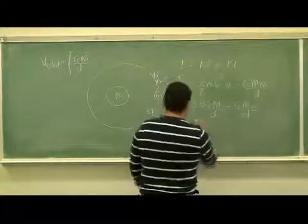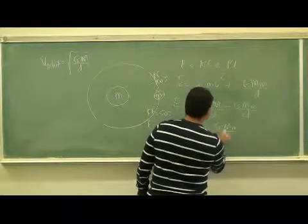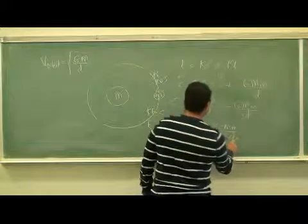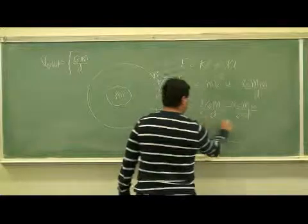So the final expression for the energy becomes negative gmm over 2d, because this is 2, and then you get negative gmm over d.